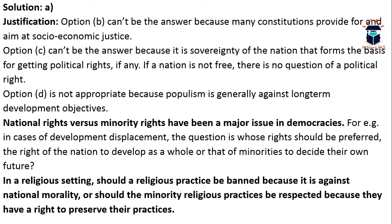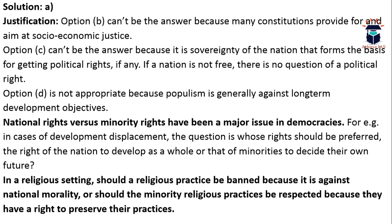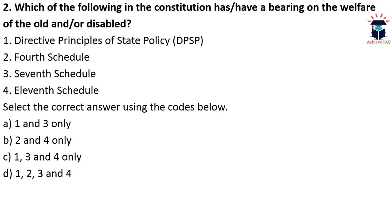That is the uniqueness of our series — we not only give you the answer but also discuss the incorrect options and explain why they are wrong. Now let's move to the next question: Which of the following in the Constitution have a bearing on the welfare of the old and disabled? First — Directive Principles of State Policy; Second — Fourth Schedule; Third — Seventh Schedule; Fourth — Eleventh Schedule. We have to choose the correct answer combination. The Fourth Schedule relates to the allocation of seats of states in Rajya Sabha, so option 2 cannot be the answer.